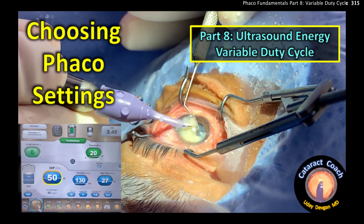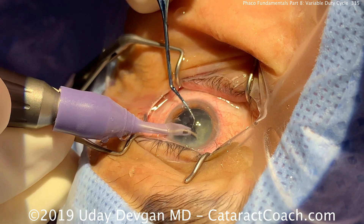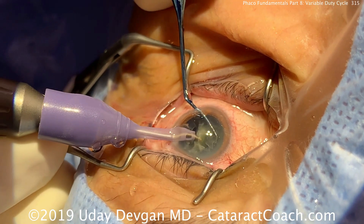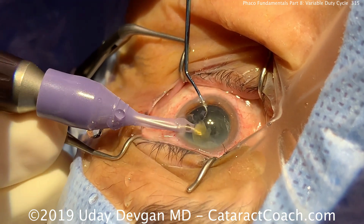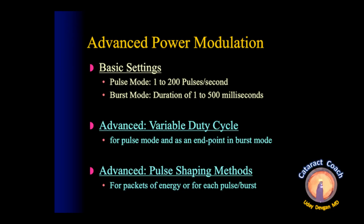Cataractcoach.com — choosing phaco settings, part 8: ultrasound energy and variable duty cycle. What does that mean? When we do cataract surgery and we're applying the phaco energy, we can hear that we're giving very fine pulses of energy. The basic settings are pulse mode and burst mode, but we can also change advanced variables such as the duty cycle and even the shape of each ultrasound pulse of energy.